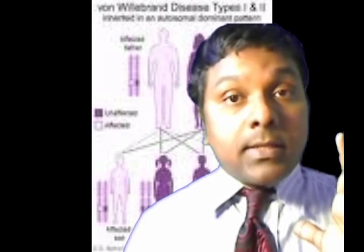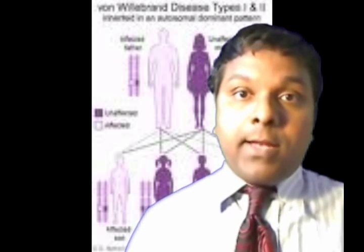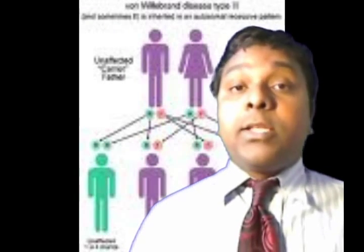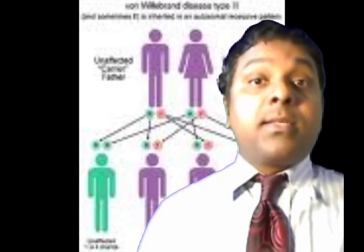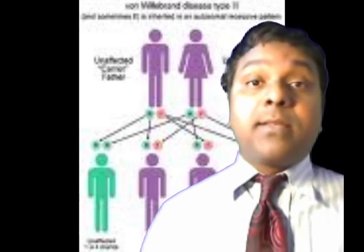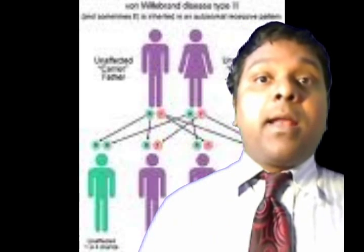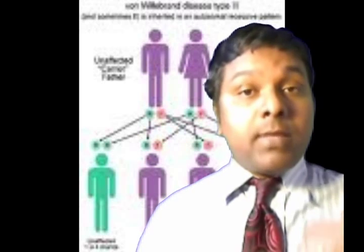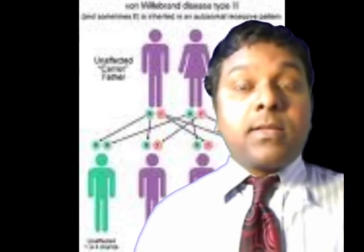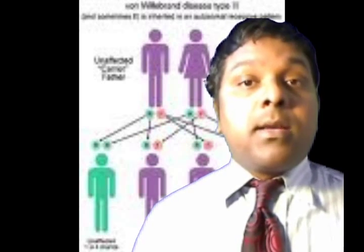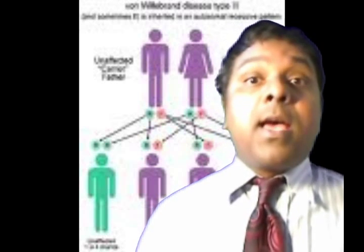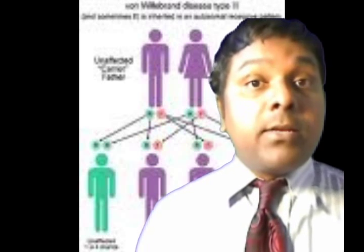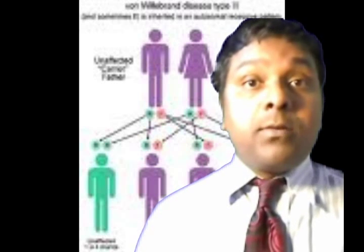Many people develop bleeding because of this disorder, particularly children and adolescents. Symptoms include recurrent epistaxis, gingival bleeding, and unusual bruising. Some people develop gastrointestinal bleeding, hematemesis, melena, and hematochezia. Some people even develop hemarthrosis — blood in the joints — and wonder what is happening to their joints.